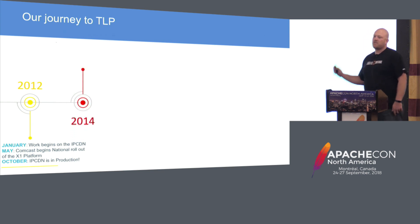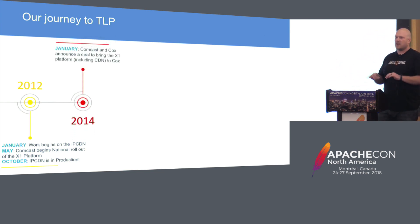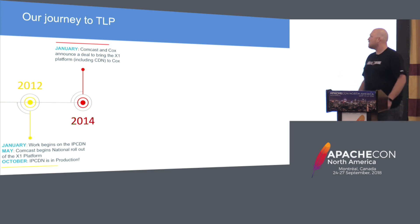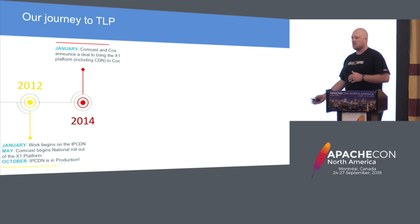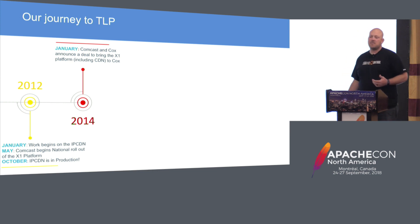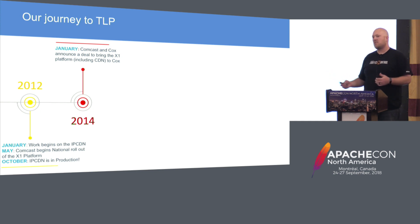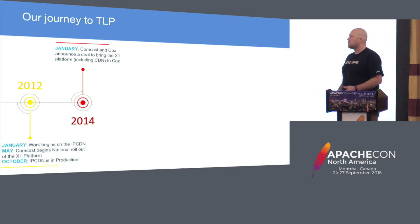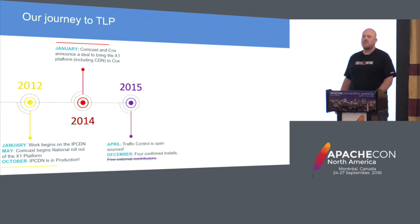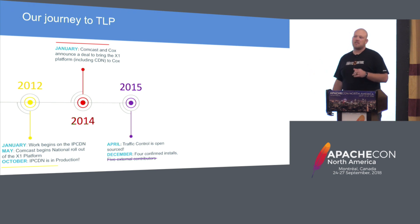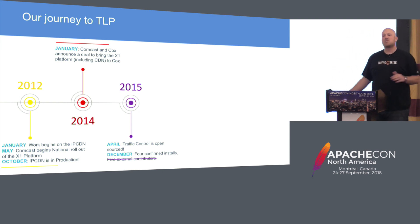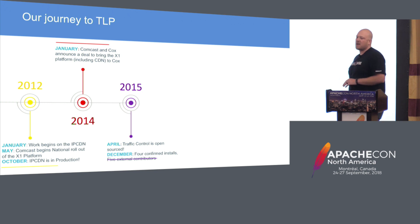Moving on to 2014 — we'll skip over 2013, it was just a lot of heads-down writing code, committing, scaling. In January of 2014, Comcast and Cox — another cable company in the US — announced a deal to bring X1 to Cox. We syndicated and licensed it to them, which included the CDN. At the time our team had six people on it. We were like, there's no way we can build all of this at Comcast and then go help build all of this at Cox — we just can't support two things at once plus all the growth we're seeing. So we knew what we had to do: open source it. We had to make it available so Cox could do it themselves and whoever else was looking to do similar things could too. In April 2015, we achieved that by going through all the legal and open sourcing it to github.com/Comcast/traffic-control. We had four confirmed installs and a total of five external contributors by then when we launched.